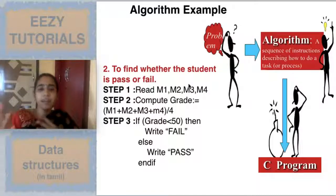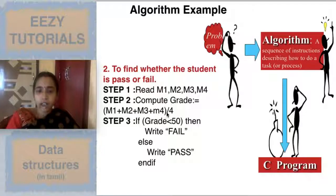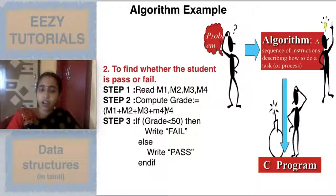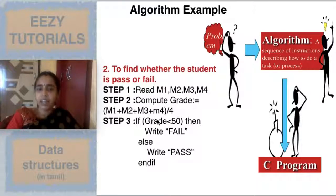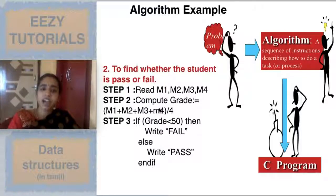Next example: how to find whether a student passes or fails an exam. Step 1: Get marks. Step 2: Compute grade = (M1 + M2 + M3 + M4) / 4. Step 3: If grade is less than 50, print 'Fail'; else print 'Pass'. End if. The logic here is that if the average crosses 50, the student passes.